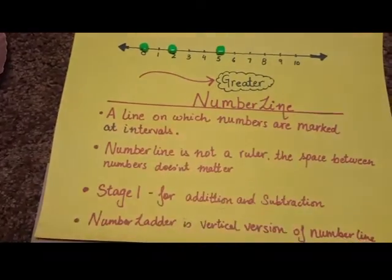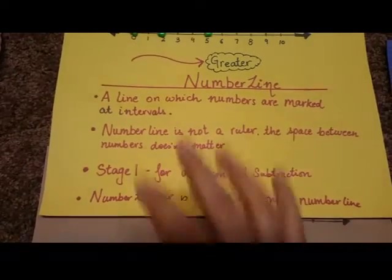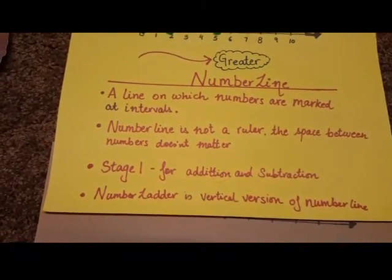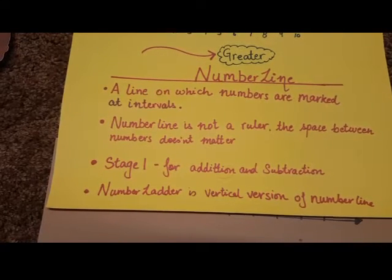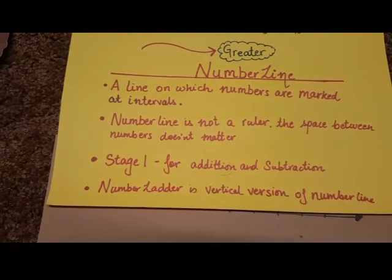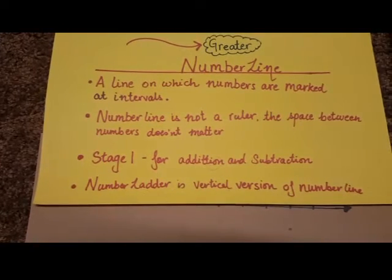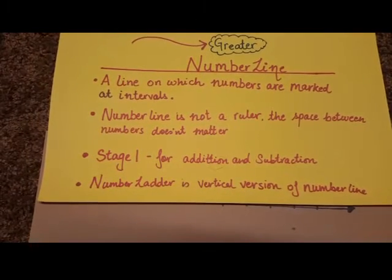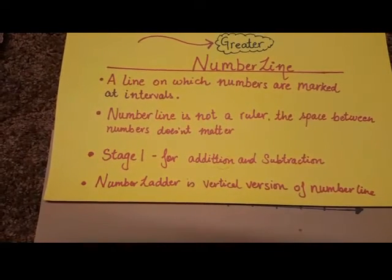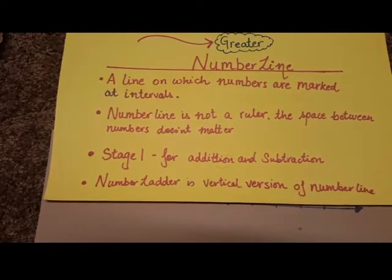The intervals in between, they really don't matter because it really depends on how are you placing the number. I mean in terms of the distance would just not matter and this is basically just to let him know that this is how a number line looks like. And then I am going to read it to him with some examples and with some activities. A line on which numbers are marked at intervals is a number line. Number line is not a ruler, the space between numbers doesn't matter. It's a stage 1 for addition and subtraction. A number ladder is a vertical version of number line.